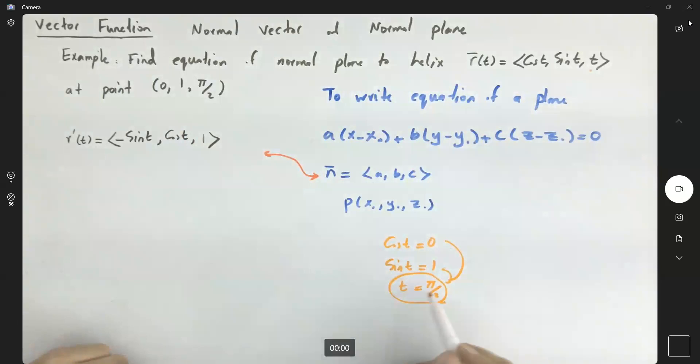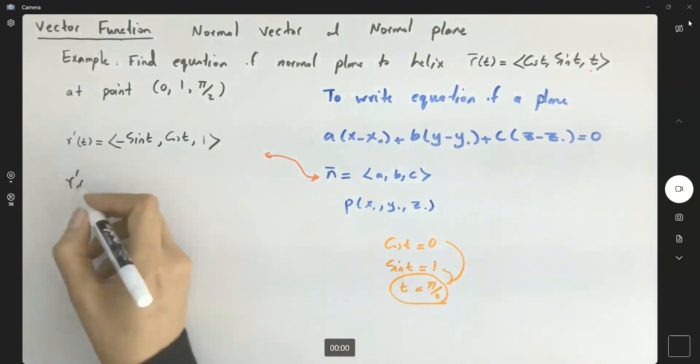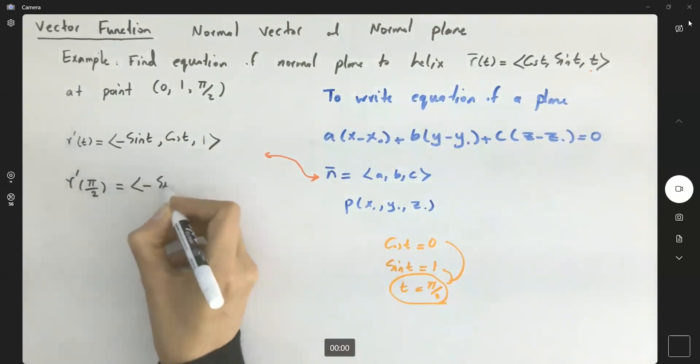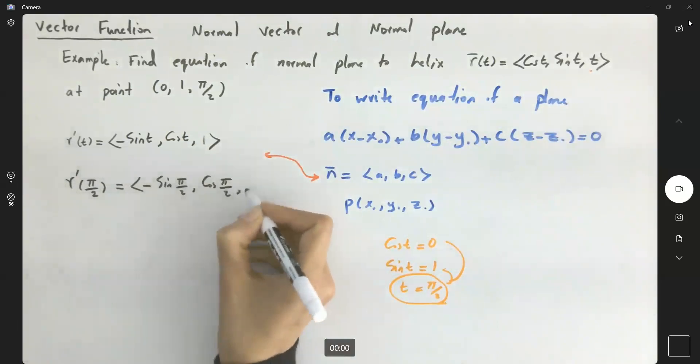So your t is π/2, substitute that here to find your normal vector. r'(π/2), which is equal to ⟨-sin(π/2), cos(π/2), 1⟩.